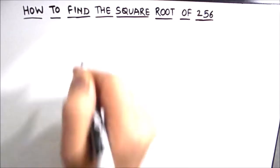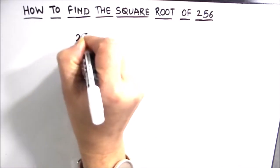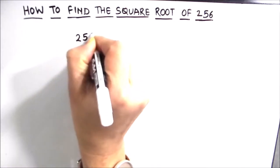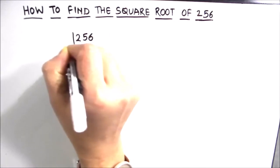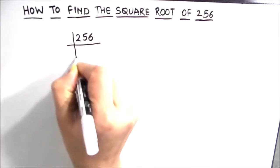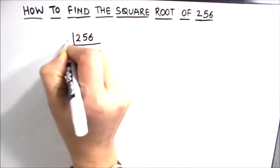So let's divide 256 using the prime numbers. As 256 is an even number it is fully divisible by 2.